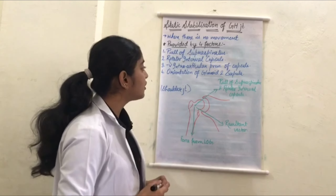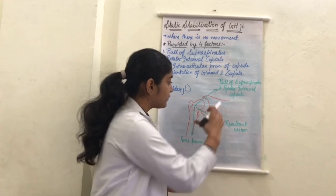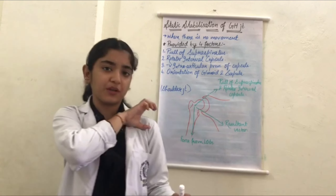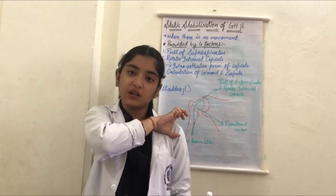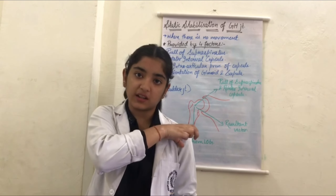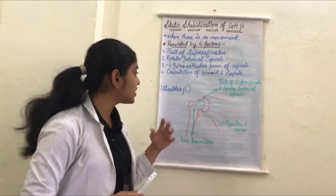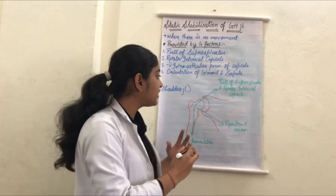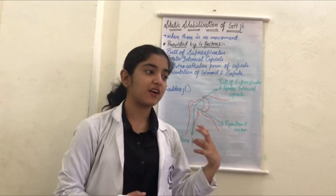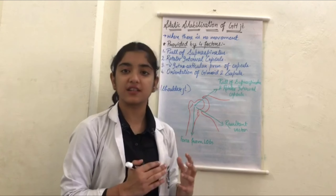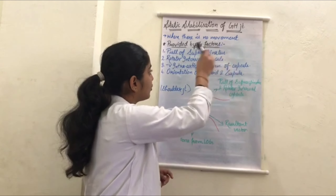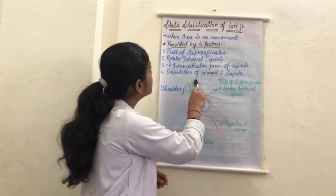The fourth factor is the orientation of the glenoid and scapula. The scapula and glenoid cavity are oriented anteromedially, and the glenoid is slightly downward-tilted. The humeral head orientation matches this alignment. This orientation means the head does not simply fall out of position. These four factors together — supraspinatus pull, rotator interval capsule, intraarticular negative pressure, and glenoid orientation — mainly contribute to static stabilization.